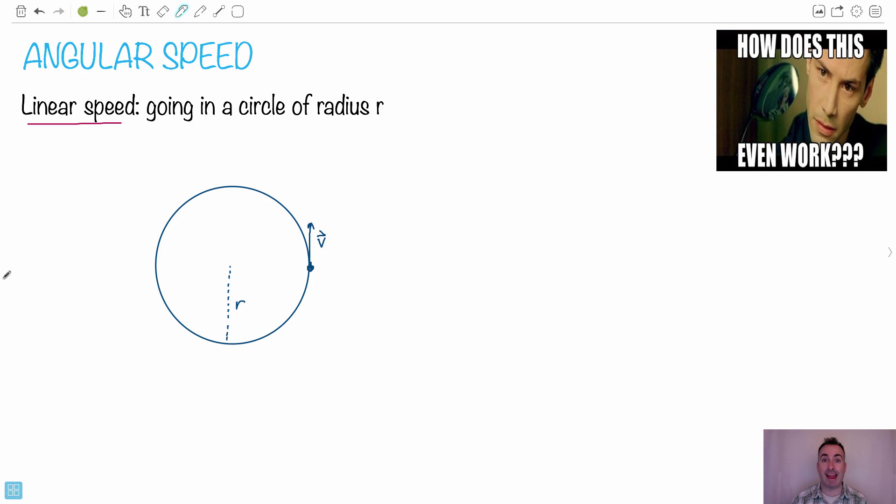I'm going to start by explaining angular speed. But in order to understand angular speed, I think it's important to look at the contrast, which is linear speed. With a lot of students, angular speed especially seems a little bit wacky. It reminds me of the movie The Matrix with Neo, like how does this even work? He tried to bend the spoon with his mind.